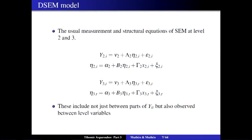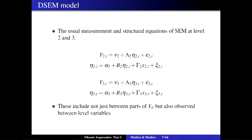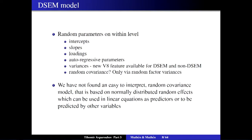On level two and level three — the individual level and the time-specific level — we have standard structural equation models. We can also use observed variables on these levels, such as time-invariant individual-level variables or individual-invariant time-specific variables. The same applies for covariates, and we also have latent variables on both levels. On the within level, pretty much all parameters can be random.